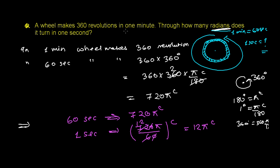A wheel makes 360 revolutions in one minute. Through how many radians does it turn in one second? So in one second, the wheel is turning by 12 pi radian.